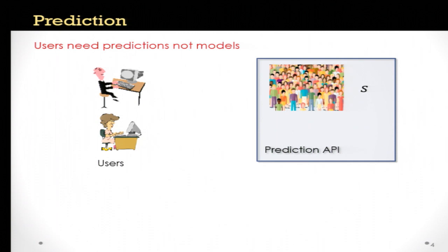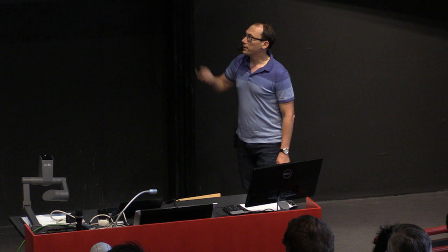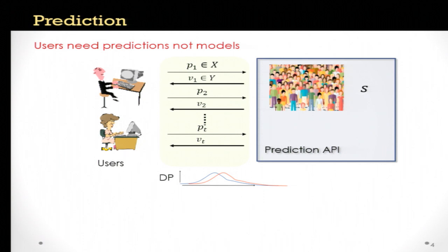Corresponding to this view, we can think of having some sort of prediction interface which has access to all the sensitive data and allows users to ask queries on their data points. Specifically, it allows the user to submit some point in the domain and will answer with the prediction for that point, and may allow the user to ask more points, potentially allowing more than one user. To ensure privacy, this whole transcript of interaction must be produced in a differentially private way.